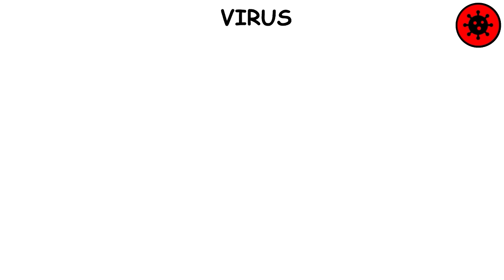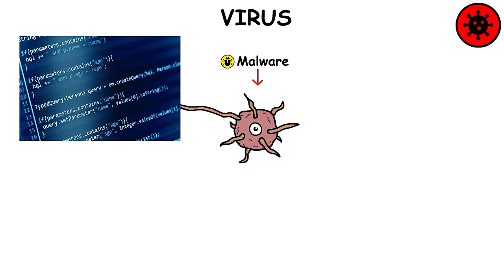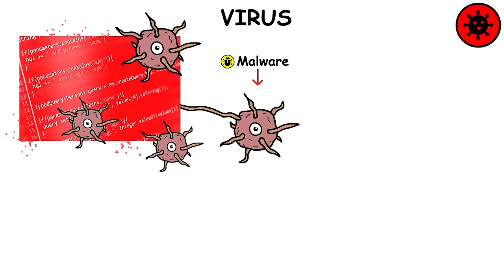Virus. A computer virus is a type of malware that, when executed, replicates itself by modifying other computer programs and inserting its own code into those programs. If this replication succeeds, the affected areas are then said to be infected, just like with biological viruses.